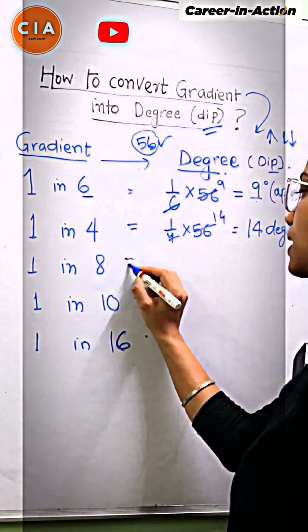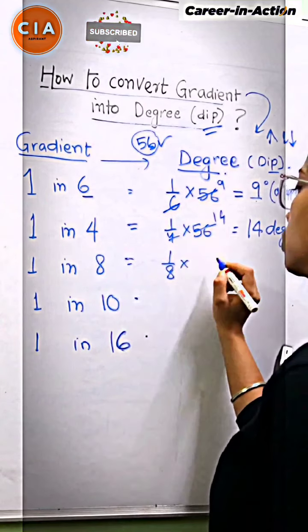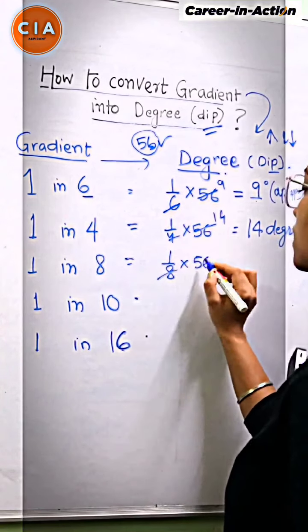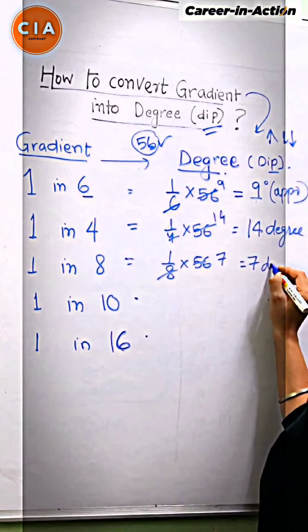In that way, we will do 1 in 8. How do you do it? 56 divided by 8 equals 7 degrees. So, we will get 7 degrees.